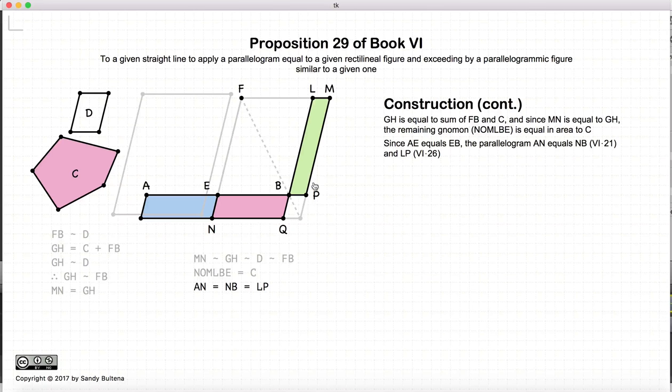And NB and LP are equal because they are complementary parallelograms drawn along a diagonal. So we have AN is equal to NB, which is equal to LP.